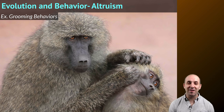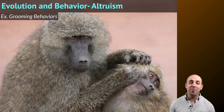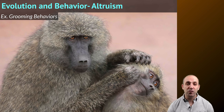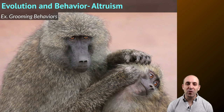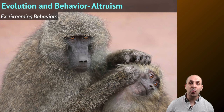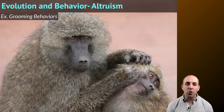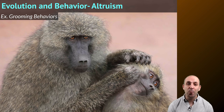Evolutionary perspectives on behavior can also help explain altruistic behaviors, wherein an organism engages in a behavior that doesn't seem to benefit it directly from an evolutionary perspective. There's no particular benefit to a monkey grooming another monkey — it takes time, effort, and energy that could be used to survive or find a mate. But grooming behaviors are widely seen in animal populations. One possible reason is the benefits such altruistic behaviors give the population as a whole, particularly when it consists of closely related individuals. By working altruistically to ensure the success of close relatives, an individual increases the reproductive fitness of at least some of their genes, even if not their own directly. We see this when an adult risks their life for their direct descendant child, effectively helping their own genes be passed to the next generation.